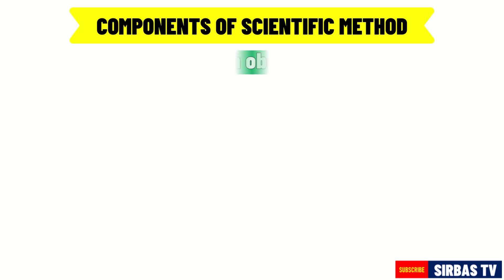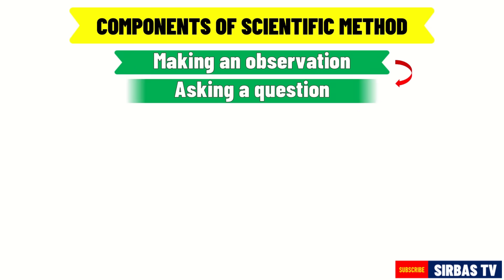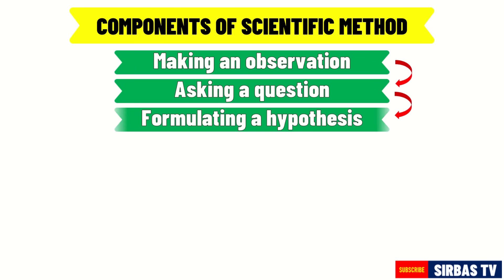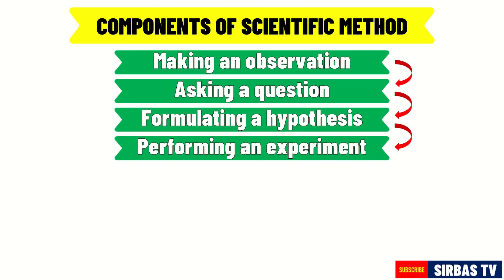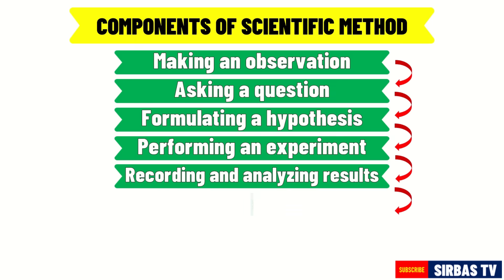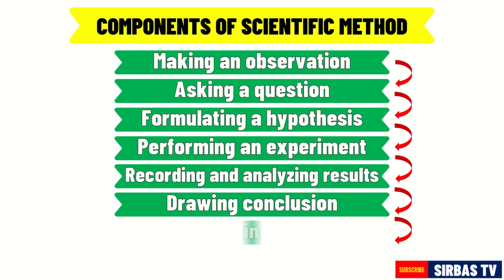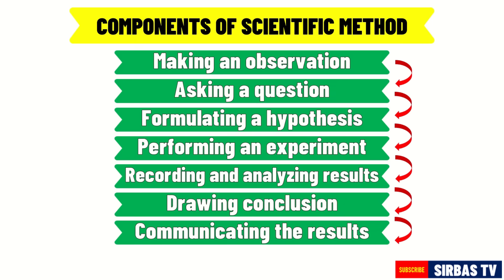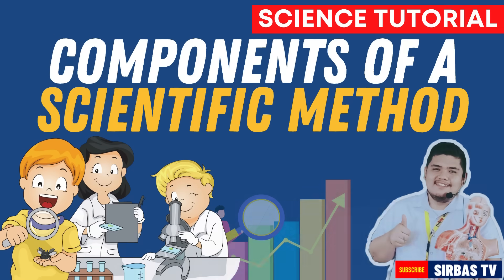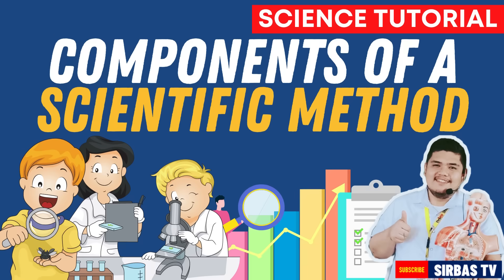Again, these are: making an observation, asking a question, formulating a hypothesis, testing the hypothesis through experimentation, recording and analyzing the results, drawing a conclusion, and communicating the results. You may find other versions of the scientific method, but you should remember that their purpose is the same — to find solutions to our problems in a logical and organized way. And that ends our discussion about the components of the scientific method.